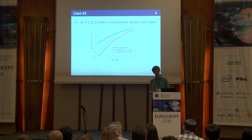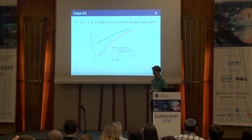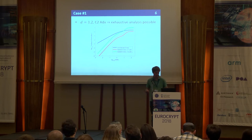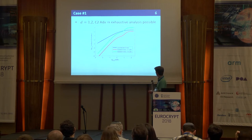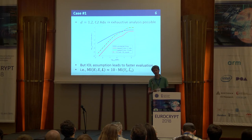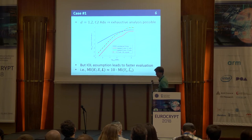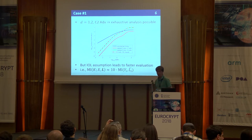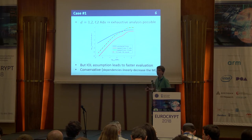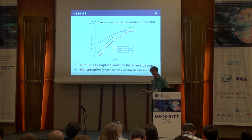Moving to the C2 adversary — exploiting all 10 D-tuples — exhaustive analysis is still feasible though slower, giving the green curve. By exploiting everything in the implementation we get weaker security guarantees. Interestingly, by taking advantage of the assumption that leakages of different operations are independent, we get a bound that is very accurate in this case. The mutual information between the key and the leakage matrix is just 10 times the mutual information for one leakage vector. This is a conservative assumption because dependencies can only decrease mutual information.